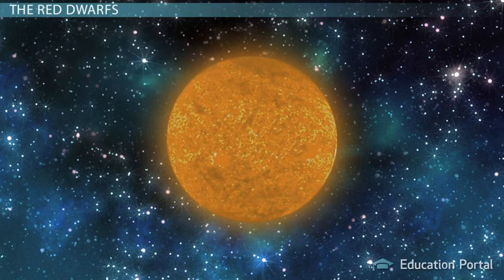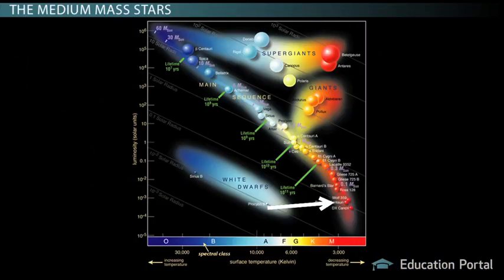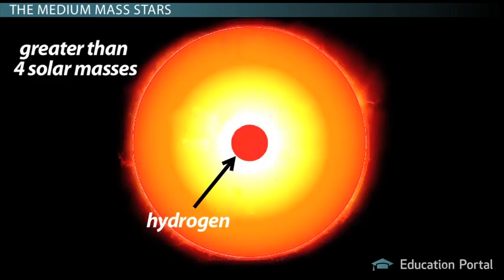Unlike red dwarfs, medium mass stars with less than four solar masses undergo a different process. Perhaps you've already watched the lesson on how giant and supergiant stars form from the main sequence stars. There you should have learned that when the hydrogen fuel runs out, it becomes a helium core. The helium core only ignites once it becomes hot enough.